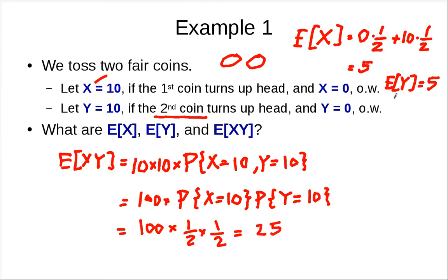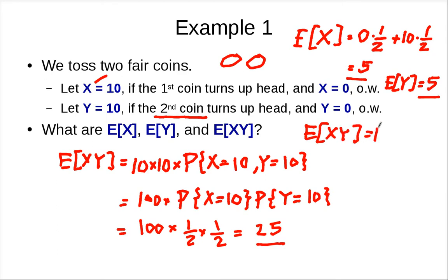Clearly, 5 times 5 gives 25. So in this example, the expected value of X times Y equals the expectation of X times the expectation of Y.